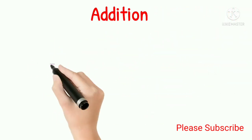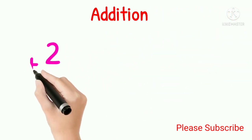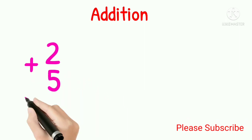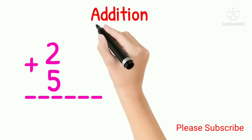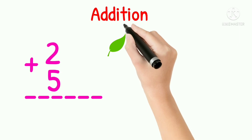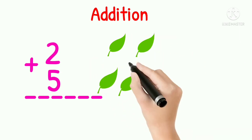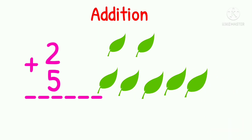2 plus 5 equal to 1, 2, 3, 4, 5, 6, 7. Answer will be 7.